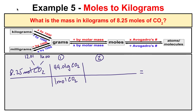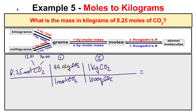Moles of CO₂ cancel with moles of CO₂ on the bottom, leaving us with grams of CO₂ — but we want kilograms. So we divide by 1,000, since there are 1,000 grams of carbon dioxide in one kilogram of carbon dioxide. Grams of CO₂ cancel out, and we take 8.25 times 44.01 divided by 1,000, ending up with 0.363 kilograms of carbon dioxide.